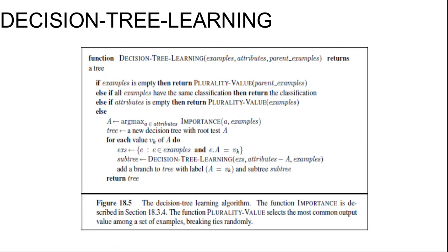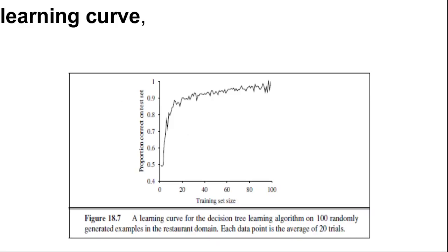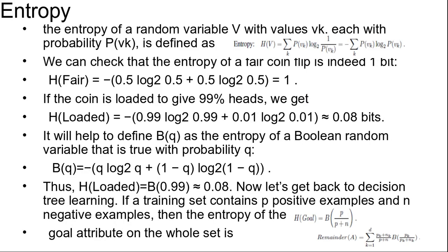We will use the notion of information gain which is defined in terms of entropy, the fundamental quantity in information theory. Entropy is a measure of the uncertainty of a random variable.